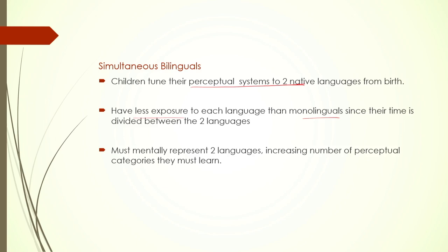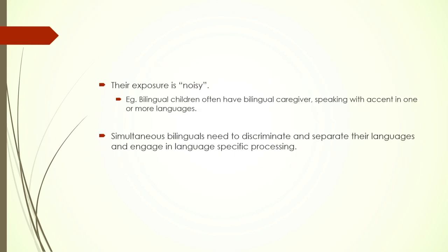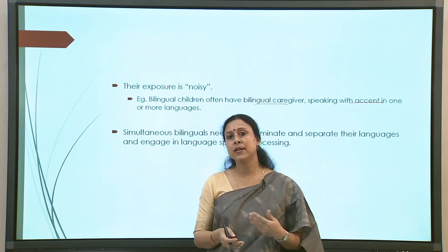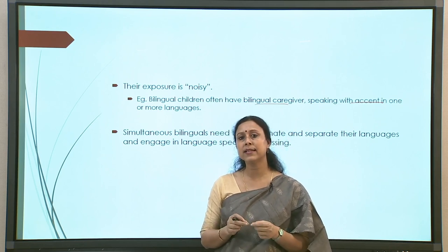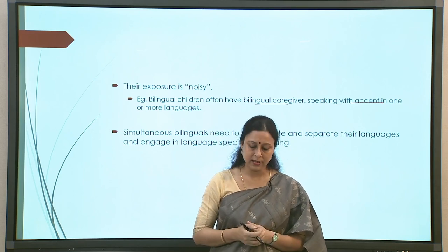As a result, simultaneous bilinguals must mentally represent two languages, increasing the number of perceptual categories they must also learn. Their exposure is also called 'noisy' technically — bilingual children often have bilingual caregivers speaking with an accent in one or more languages. In a simultaneous bilingual environment there are many possibilities: both parents may speak different languages, or there may be a third caregiver who speaks another language with various different accents. For a child's brain to make sense of what is happening, it has to negotiate this noisy environment.